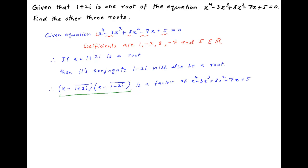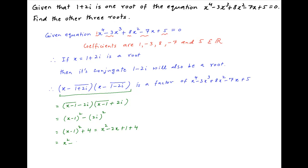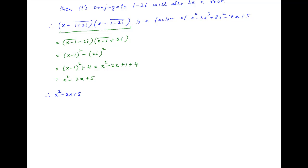Now, x minus (1 plus 2i) multiplied by x minus (1 minus 2i) equals x minus 1 whole square minus (2i) squared, which equals x minus 1 whole square plus 4, giving x squared minus 2x plus 1 plus 4. Therefore, x squared minus 2x plus 5 is a factor of x to the power 4 minus 3x cubed plus 8x squared minus 7x plus 5.